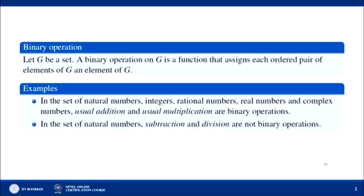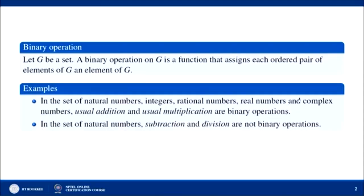Similarly, if you take the set of natural numbers and the binary operation is usual multiplication — if you take any two natural numbers and multiply them, the resultant is also a natural number. So usual multiplication over the set of natural numbers is a binary operation. Similarly for integers, rational numbers, real numbers, and complex numbers, usual multiplication is a binary operation.